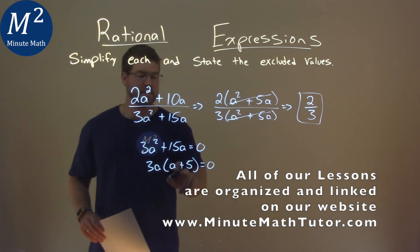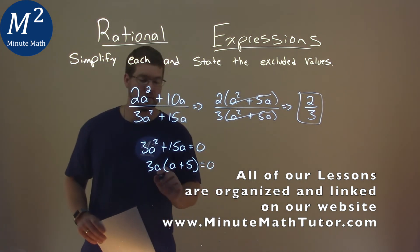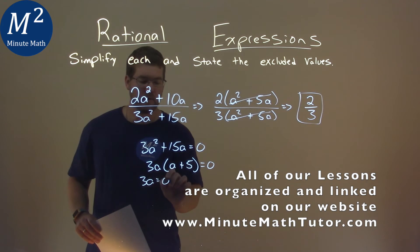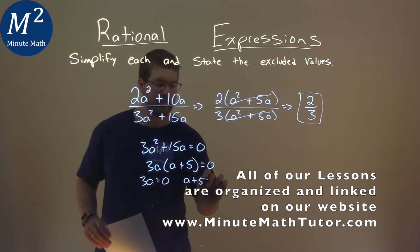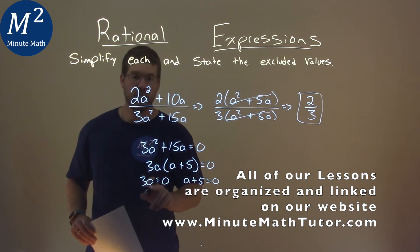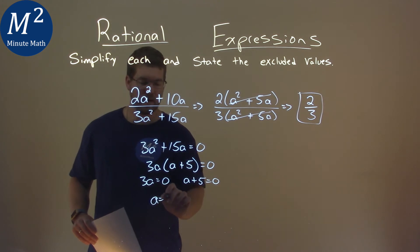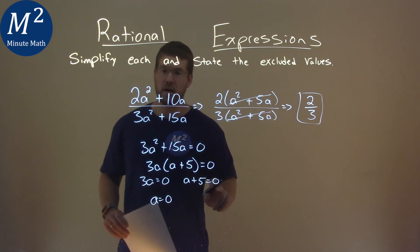Now, our rules state that we can set each part here individually equal to 0 to solve. 3a equals 0, and a plus 5 equals 0. Divide both sides by 3, and a equals 0. Subtract 5 from both sides, and a equals negative 5.